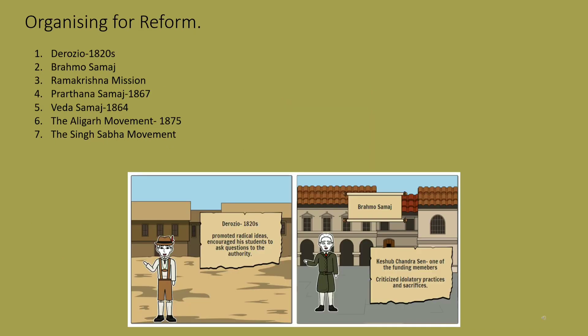Now let's take a look at the reform organizations individually. Henry Derozio was a teacher at Hindu College in Calcutta in the 1820s. He promoted radical ideas and encouraged his students to ask questions. This movement was also called the Young Bengal movement, where his students fought for the freedom of thought and expression. The Brahmo Samaj was formed in 1830 and believed in the Upanishads, refraining from criticizing other religions.